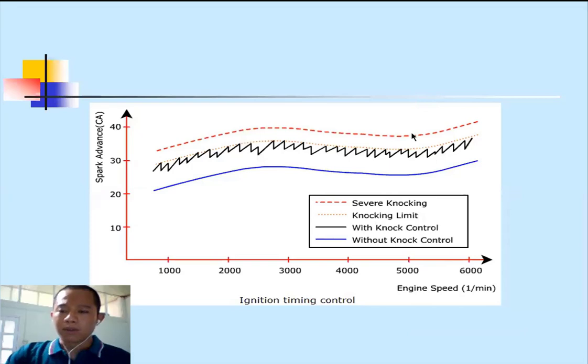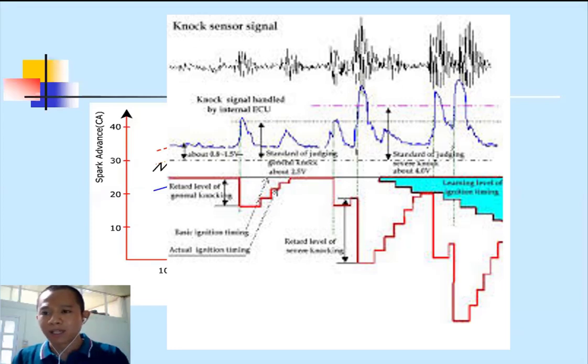For knock control, when the ECU detects knock, there are two control strategies. The first is the Japanese approach which prioritizes engine protection. If ignition timing is at 10 degrees advance and knock occurs, it immediately drops to 5 degrees - a large 5 degree step. Then it checks if knock has stopped, and gradually increases back to 6, 7, 8, 9, 10 degrees. Since retarding timing reduces engine power, it drops quickly to protect the engine first, then gradually advances back.